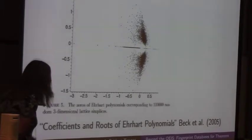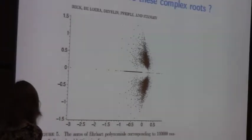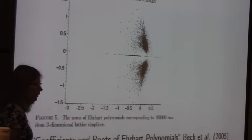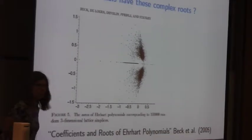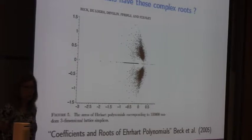These are the zeros of Ehrhart polynomials, where they took like 100,000 random three-dimensional lattice simplices, took the Ehrhart polynomial for each of them and drew the roots. There's some structure going on there, right? Those are not just randomly distributed in the complex plane. There's clearly some structure.